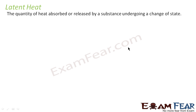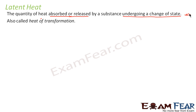Latent heat is the quantity of heat absorbed or released by a substance undergoing a change of state — from solid to liquid, liquid to vapor, or solid to vapor. It is also known as heat of transformation, because it is associated with the transformation of state from one state to another.